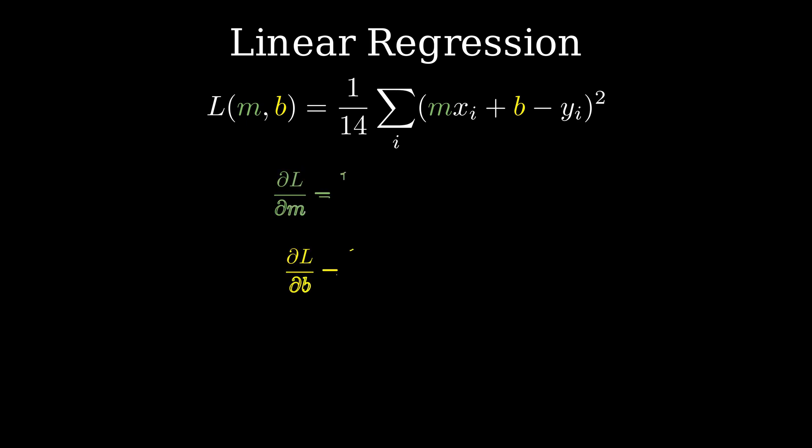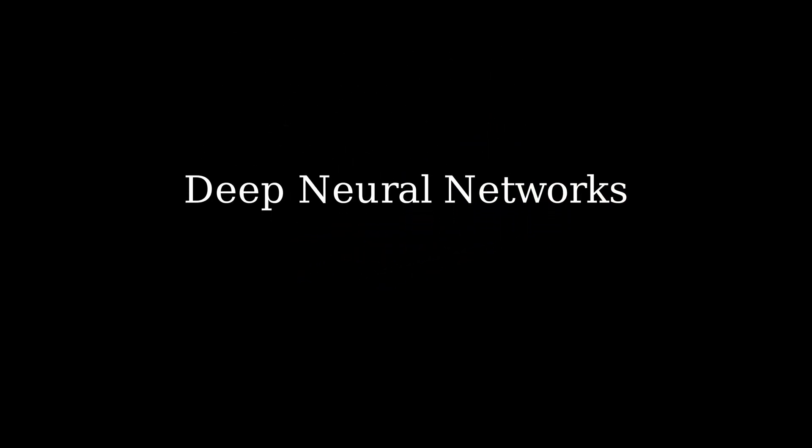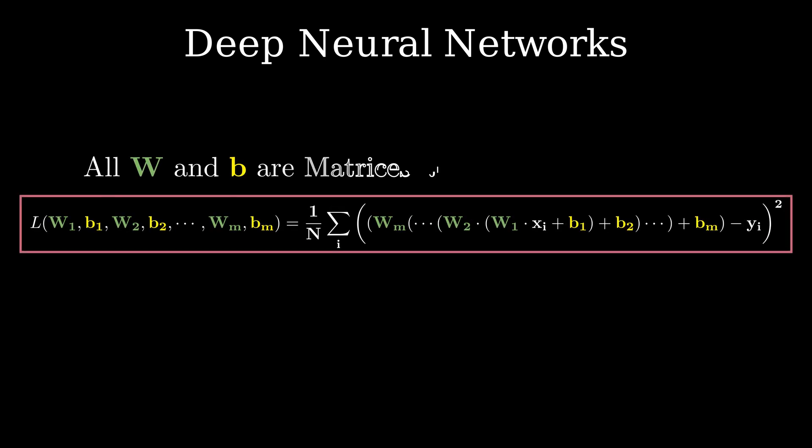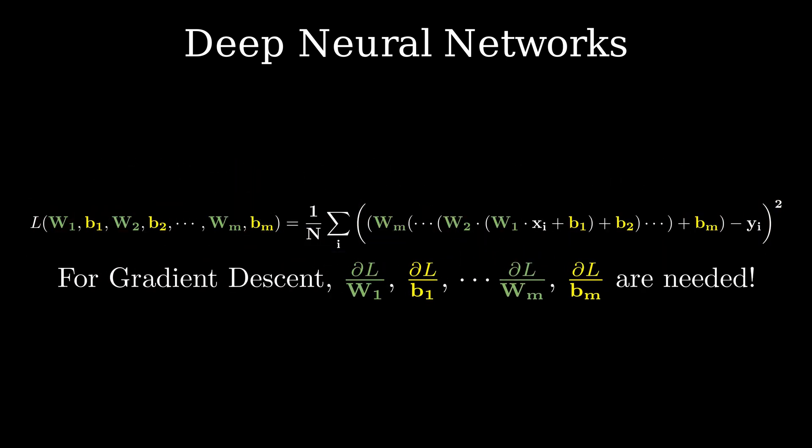A big part of gradient descent is differentiating the cost function which was simple enough for linear regression. However, when dealing with deep neural nets, the resulting cost function can be fairly complex involving hundreds if not thousands of parameters and it would be quite impractical to do this by hand.